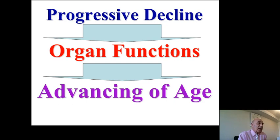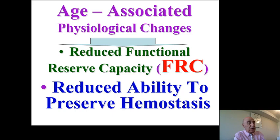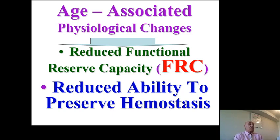The progressive decline in organ function is one of the consequences of aging. With age-associated physiological changes, there will be a reduction in the FRC — the functional reserve capacity — and a reduction in the ability to preserve homeostasis. The FRC is the ability to respond to physiological changes and to stress.